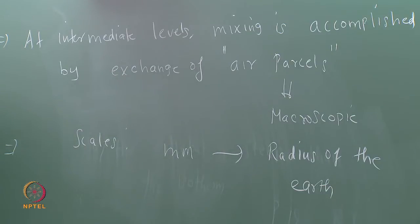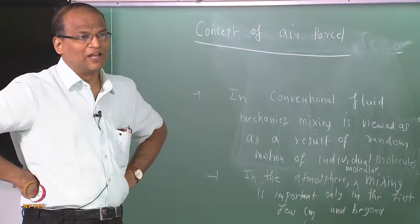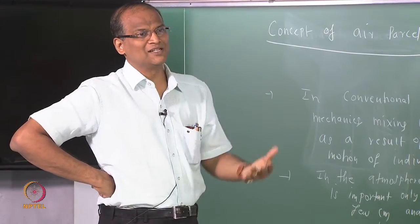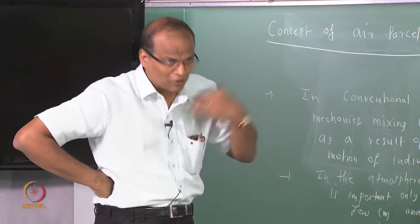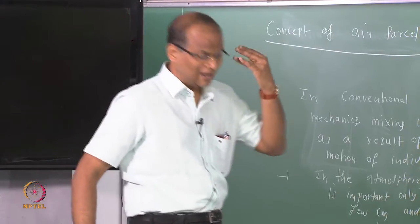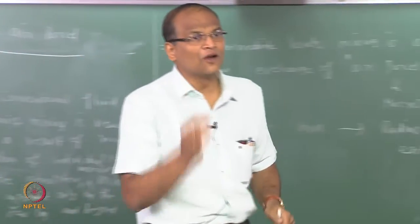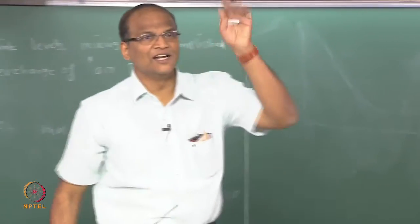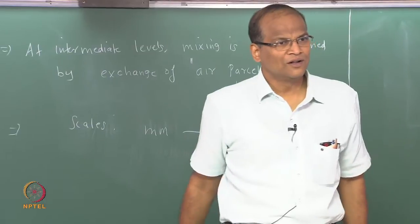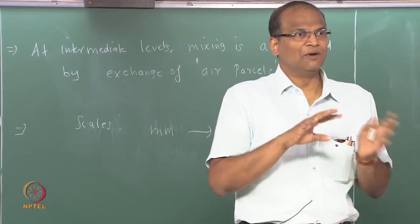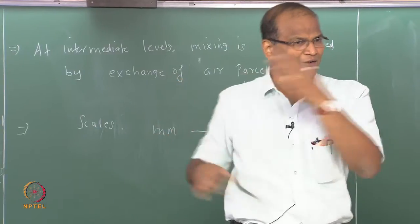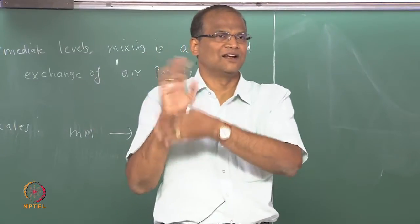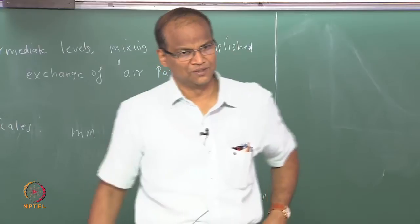Now we have established the concept of an air parcel. What are the assumptions involved? Assumption number one: the air parcel is thermally insulated from the surroundings — that is, dQ equals zero. Assumption number two: the air parcel is always at the same pressure as the environmental air at the same level. Based on these assumptions and the air parcel concept, we can figure out how temperature changes with height in the atmosphere — the lapse rate. We will also introduce the potential temperature.